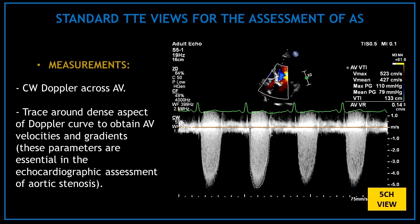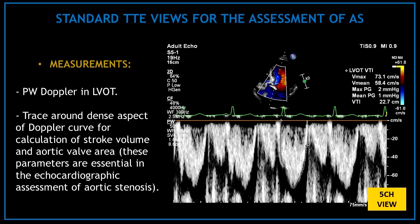Still in the apical five-chamber view, use continuous wave Doppler across the aortic valve and trace around the dense aspect of the Doppler curve to obtain aortic valve velocities and gradients — these parameters are essential in the echocardiographic assessment of aortic stenosis. Also use pulse wave Doppler in the left ventricular outflow tract and trace around the dense aspect of the Doppler curve for calculation of stroke volume and aortic valve area.